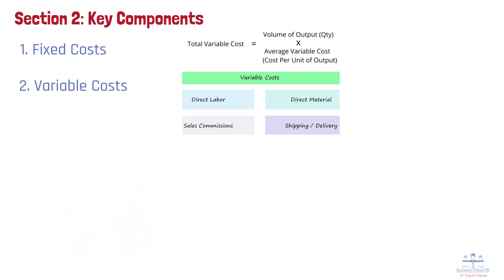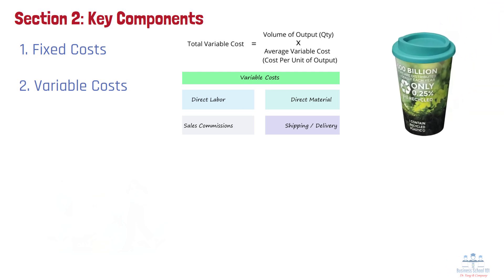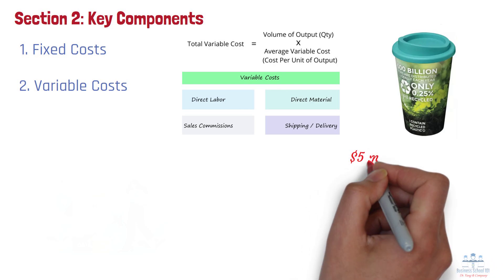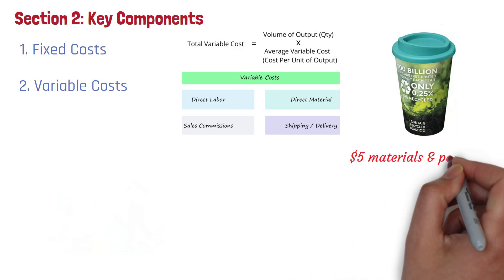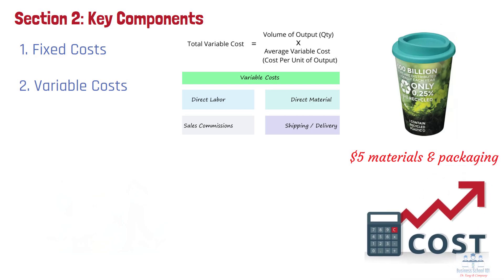In EcoCup's case, the cost of producing each reusable coffee cup, such as the materials used, would be considered a variable cost. If EcoCup spends $5 per cup on materials and packaging, this cost will increase in direct proportion to the number of cups produced.